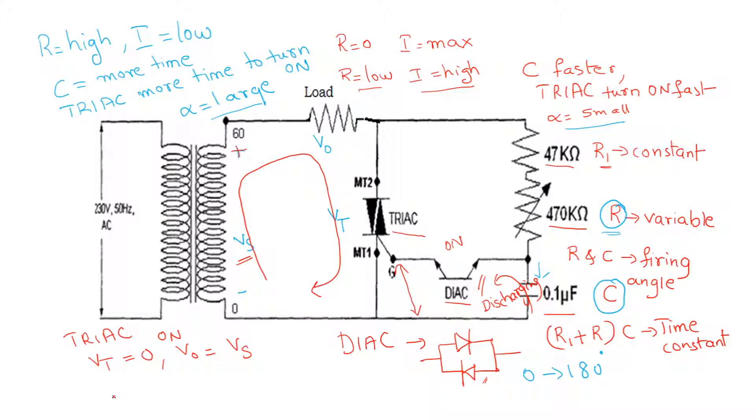If the TRIAC is not conducting, no current flows, so V0 is 0, whereas Vt will be equal to Vs. You always have to remember these points. This is about the theoretical concept of the AC voltage controller - fixed AC to variable AC.